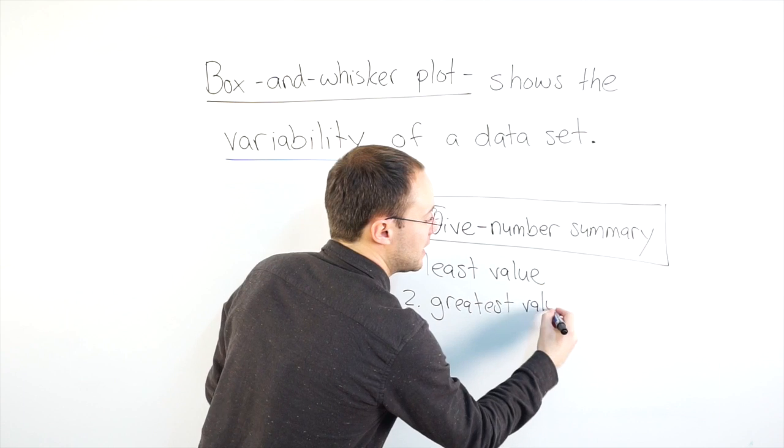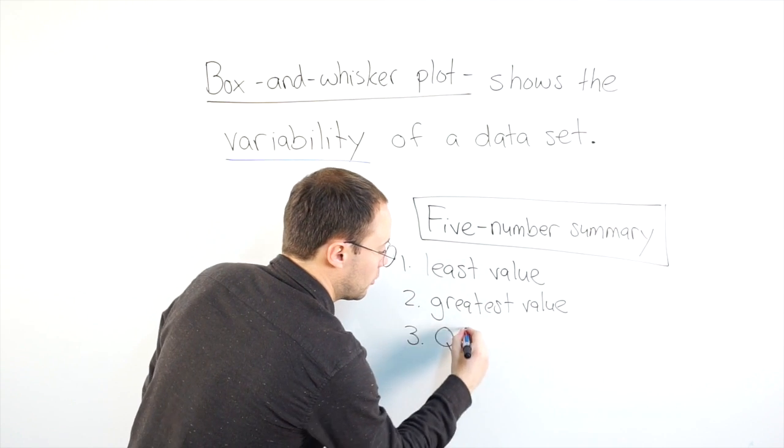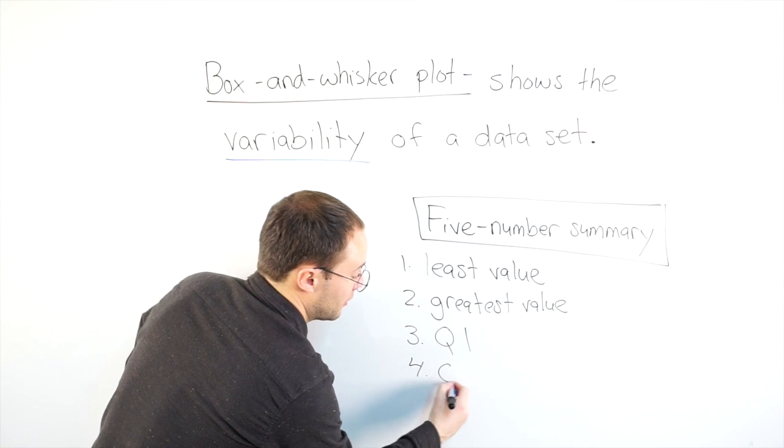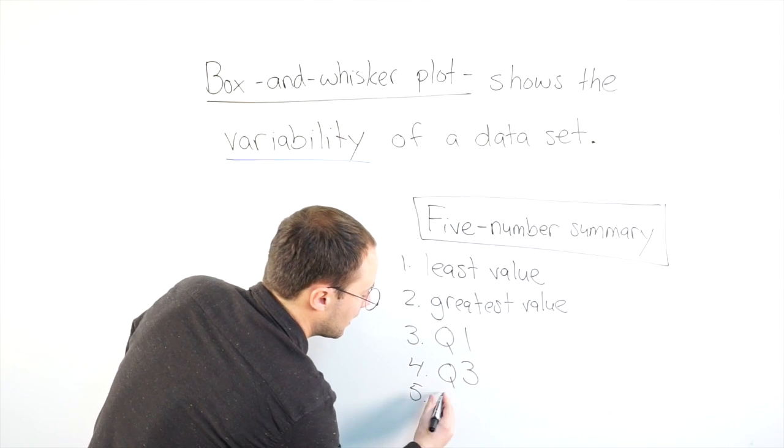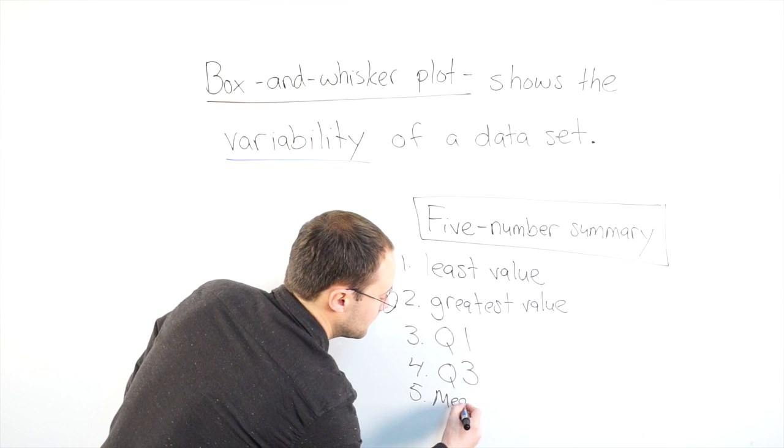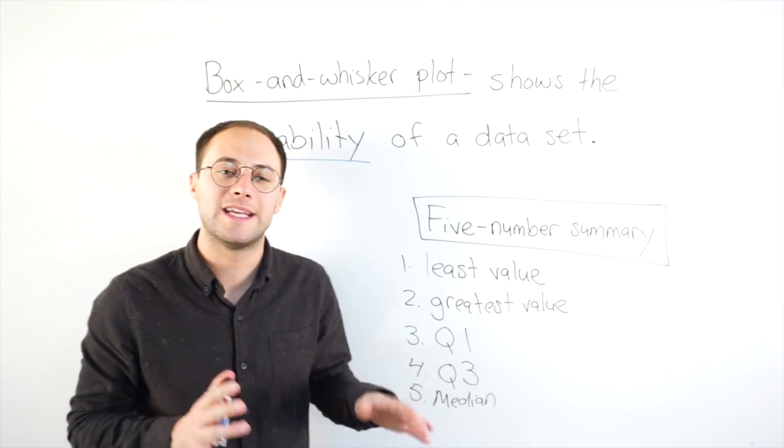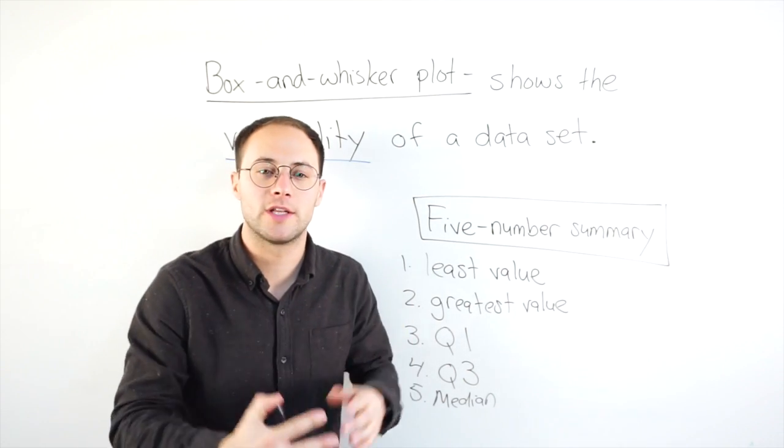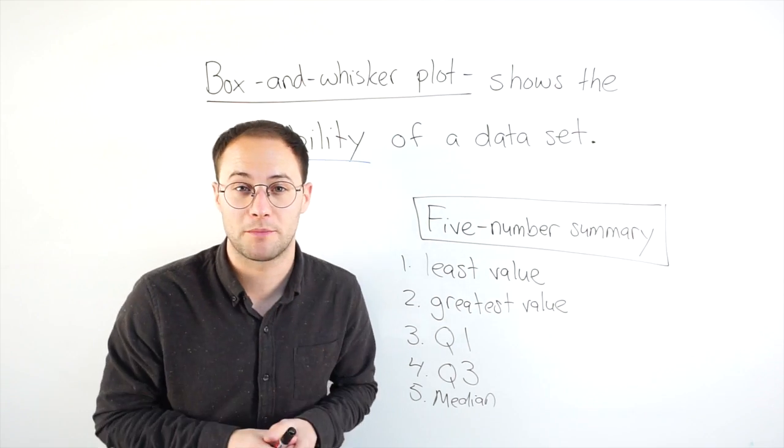You also need the first quartile, I'll call that Q1. You also need the third quartile, Q3. And finally, you need the median. Those are the five numbers that you will need to know before you can start to construct your box and whisker plot. So, let's get started with our first example.